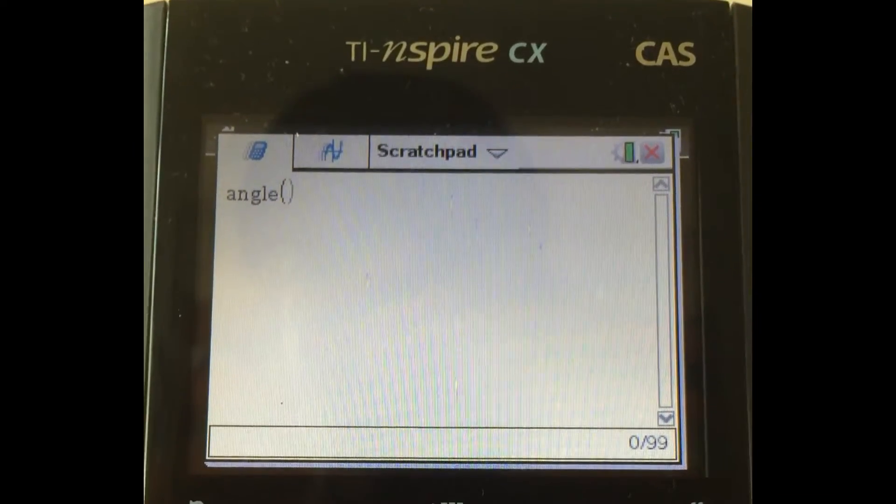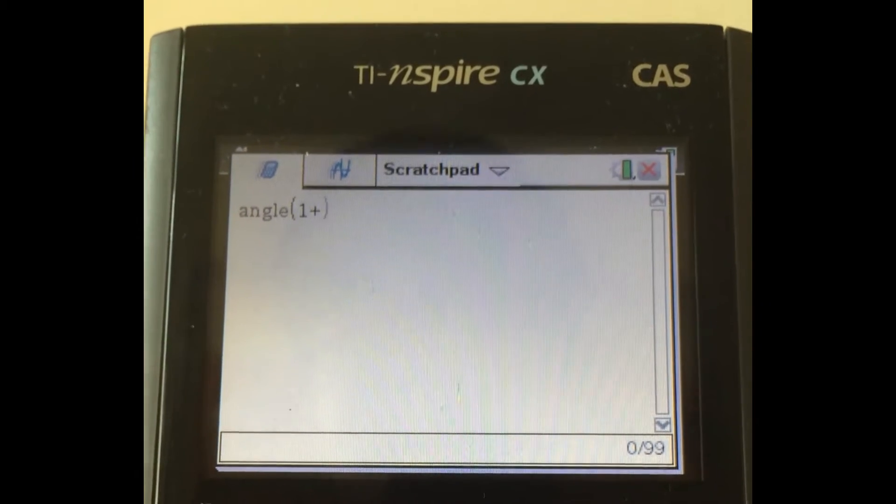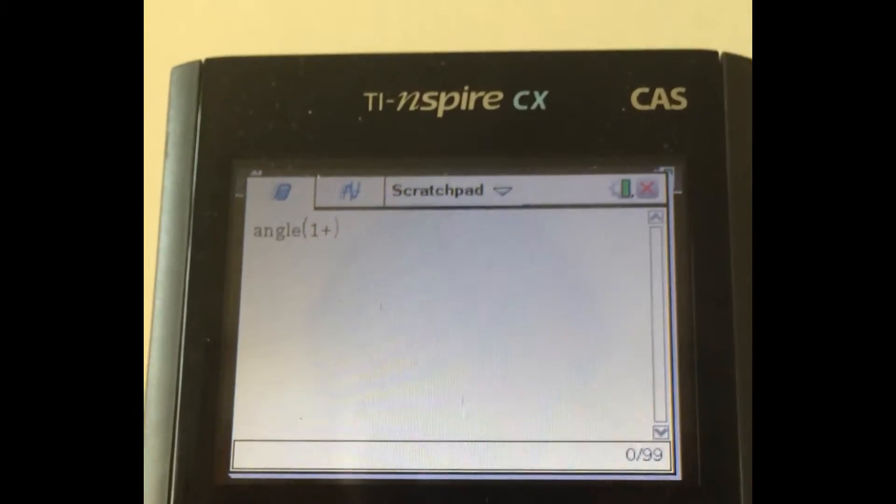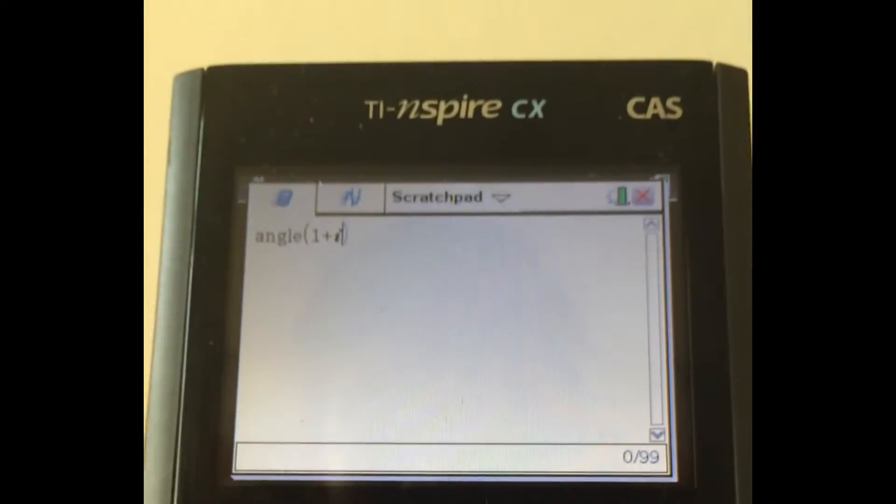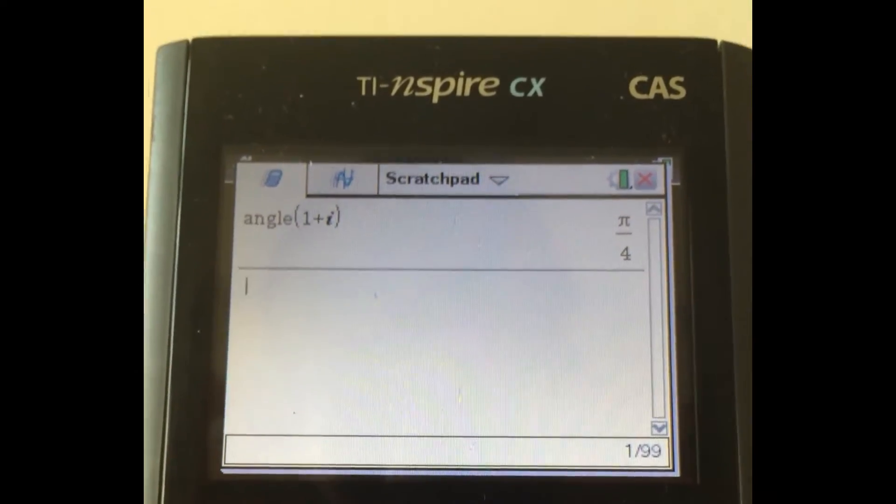So when you have cosine theta plus i sine theta, you find that value of theta. So like if you have 1 plus i, for example, the angle comes out as pi over 4. And it's going to be in radians.